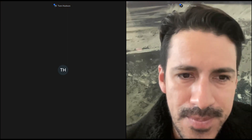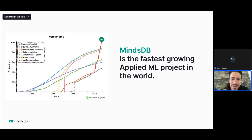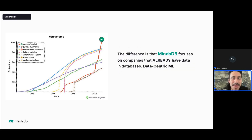Thank you Tom. Let me share my screen. MindsDB is now the fastest-growing applied machine learning project in the world. We're very happy because this is an effort we all did together — the community and everyone has gotten us here. The reason why MindsDB is such a popular project is because it has a data-centric approach to machine learning, as opposed to a model-centric approach.